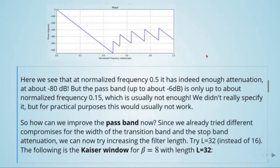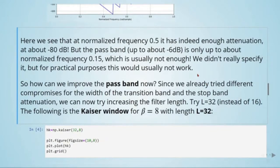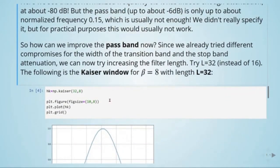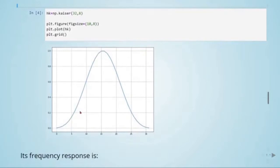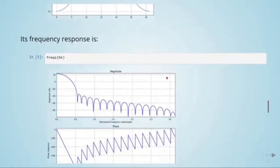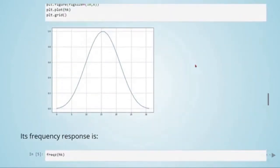So how can we improve the pass band now? Since we already tried different compromises for the width of the transition band and the stop band attenuation, we can try to increase the filter length. So if we try length equals 32 instead of 16, and we will use the Kaiser window with beta equals 8, here now we are defining the Kaiser window with beta equals 8 and the length equal to 32. Here is the frequency response of the Kaiser window.